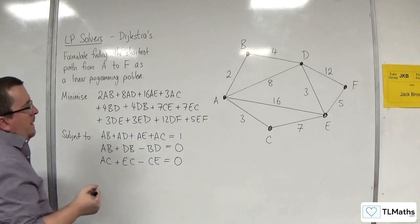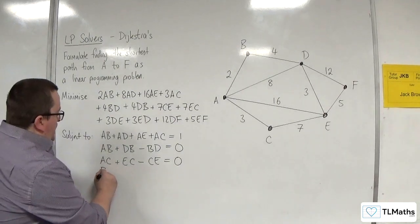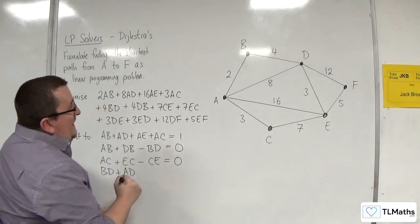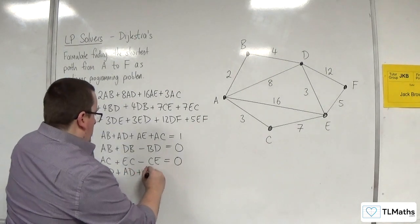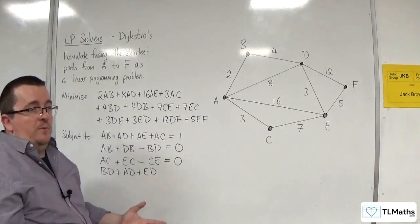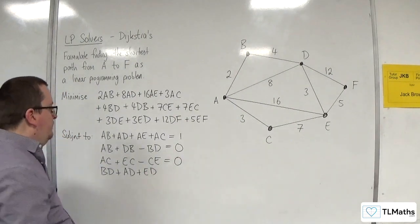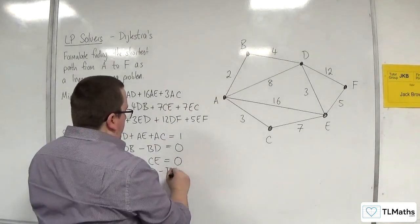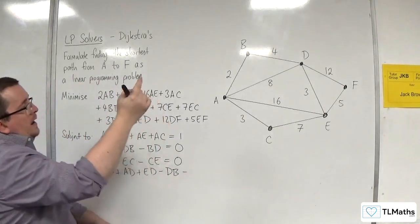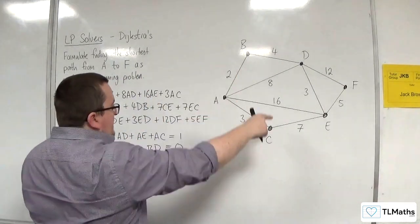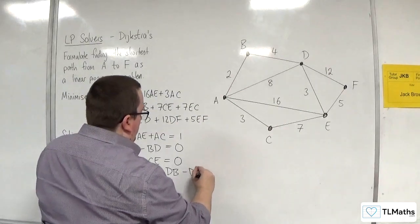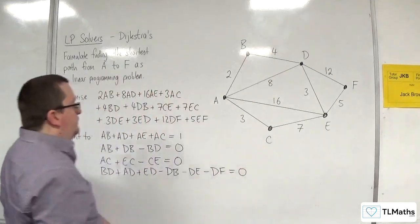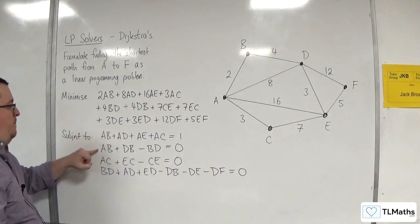Right, how about D? So routes in, we've got BD or AD or ED. Not FD because that's coming from the finish vertex. Take away the routes out, which could be DB, not DA because that gets me back to the start vertex, DE, and DF. And that's equal to zero. So we've got a constraint for A, B, C, and D.